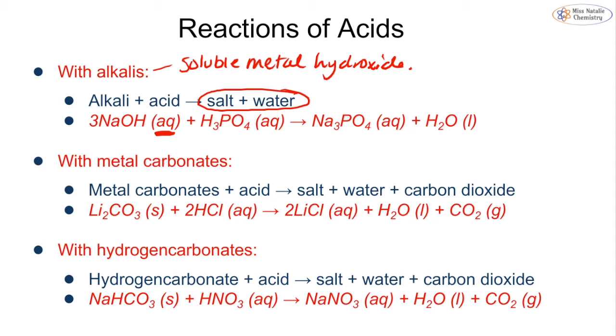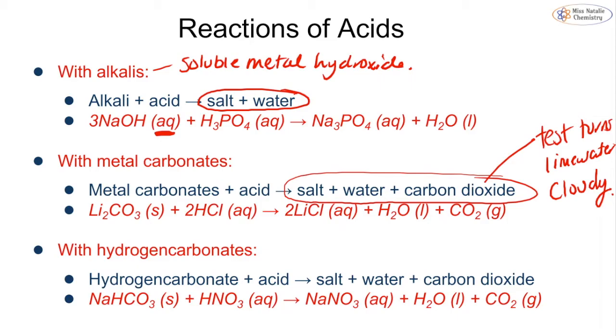If we react it with a metal carbonate, we make a salt plus water plus carbon dioxide. We can test for that because it turns lime water cloudy. The example here is lithium carbonate reacting with hydrochloric acid to make our salt, water and carbon dioxide. Hydrogen carbonates are very similar in the way they react. The difference is that we have this hydrogen and HCO3 has a one negative charge as opposed to CO3 which has a two negative charge. But we still react it the same way to get salt, water and carbon dioxide.